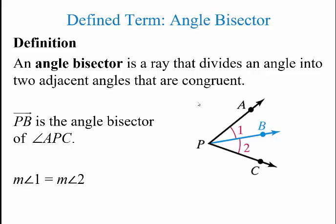A couple more definitions. An angle bisector is a ray that divides an angle into two adjacent angles that are congruent, meaning they have the same measure. So ray BP, which starts here and shoots out this way, is an angle bisector of angle APC. That means angle 1 and angle 2 are the same — the bisector cuts it right in half, so they are equal angles.